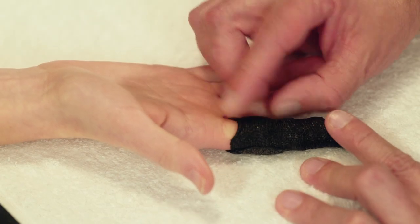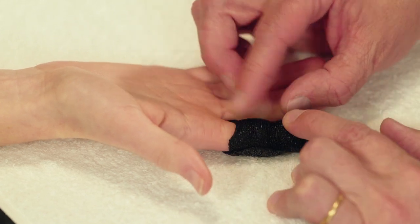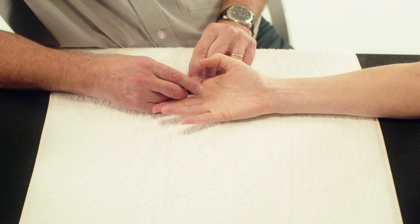Roll the edge of the orthosis on the palmar side upwards to smoothen the edge and to allow full finger flexion at the MCP joint.